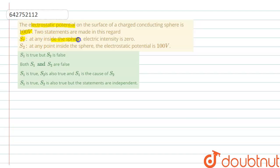at any point inside the sphere, electric intensity is 0. Second statement, at any point inside the sphere, the electrostatic potential is 100V.